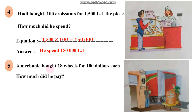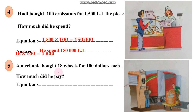Number 5. A mechanic bought 18 wheels for 100 dollars each. How much did he pay? We should also use multiplication. The equation is 18 times 100. 18 times 100 equals 1,800. We write the 18 and add the 2 zeros, so 1,800.